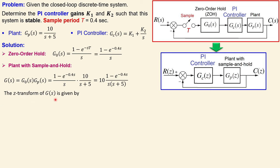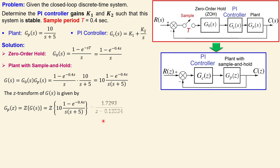The z-transfer of G(s) is the z-transform of the zero order hold transfer function multiplied by the plant given in the s-domain. Looking up the z-transform pair tables, you get the discrete time plant transfer function - you can check that or trust the result shown here.